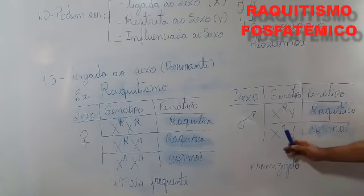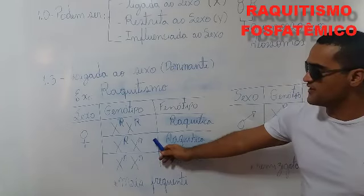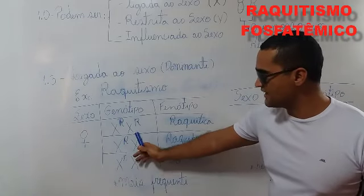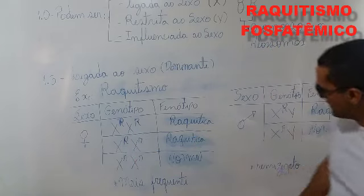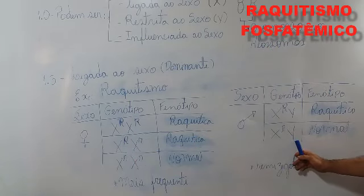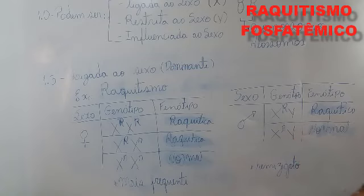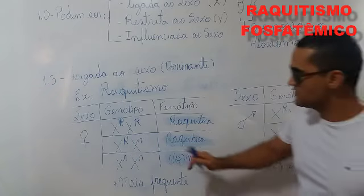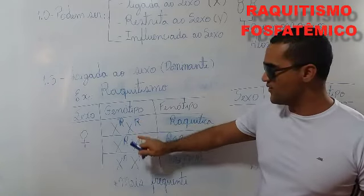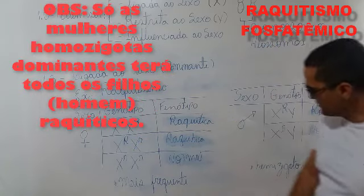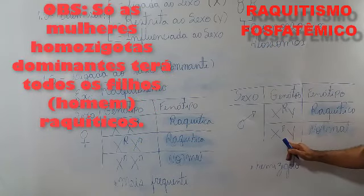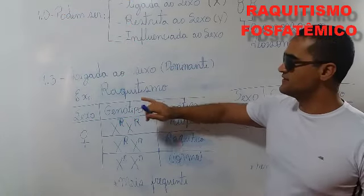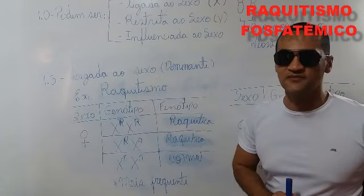Então, é mais fácil termos o raquitismo em mulheres do que em homens. Se tivermos uma mulher raquítica, todos os homens serão raquíticos. Por quê? Porque o homem recebe o X da mãe e o Y do pai. Então, se a mulher for raquítica, homozigota ou heterozigota, todos os homens serão raquíticos, pois receberão um gene R dominante do raquitismo.